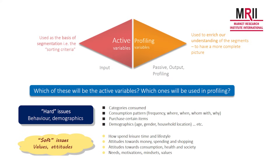Once the analytic process has created the segments, we need to interpret them. We don't know when we start how many segments really exist. A segmentation process will create a range of solutions — maybe four segments, five, six, seven. Our task is to decide how many segments is optimal, and then what those segments look like.